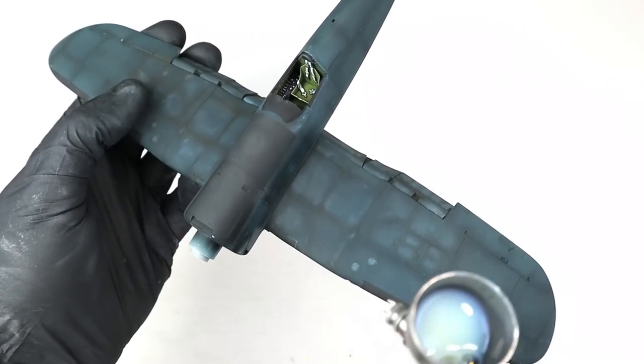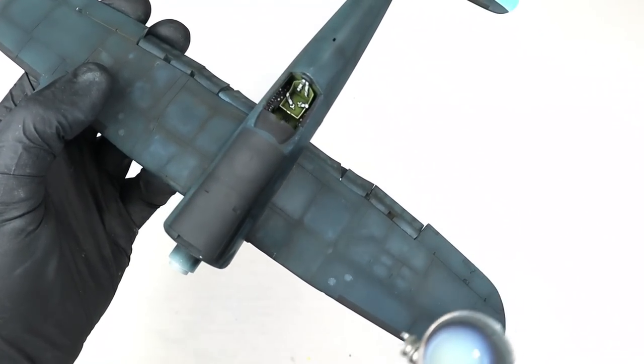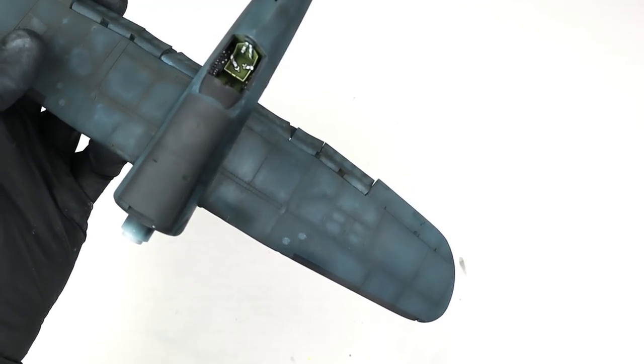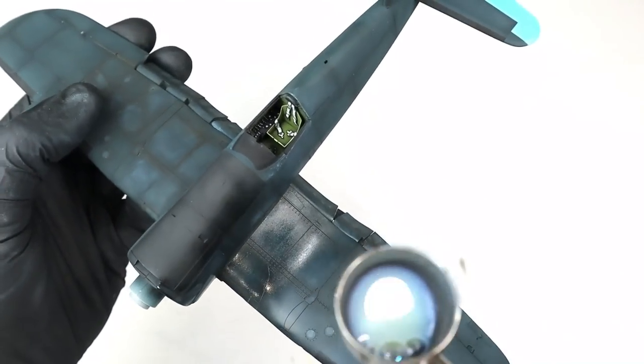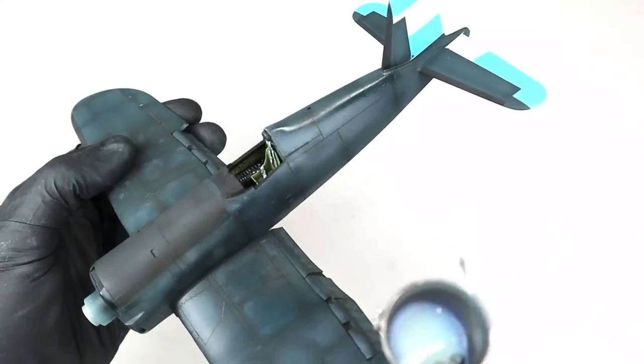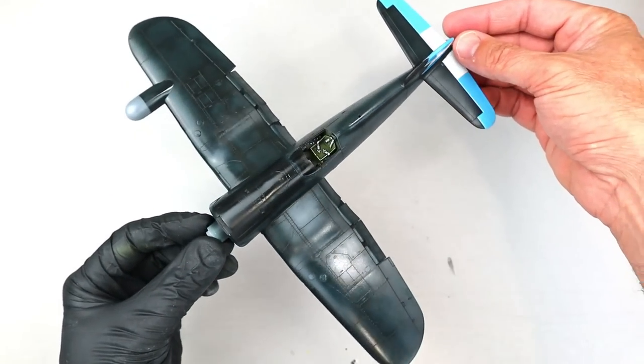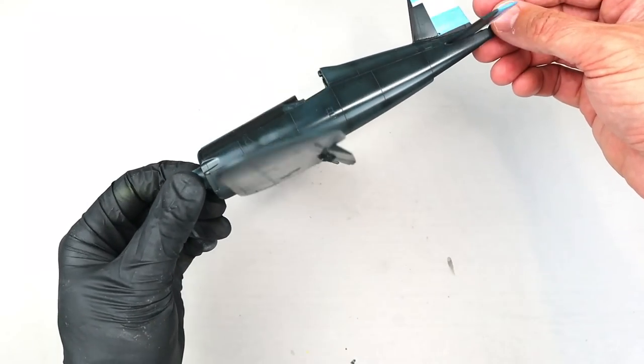With all of the airframe painting complete, I gloss coated the entire model using AK Gauzy's Shine Enhancer. This provides a nice glossy finish for the decals as well as the oil wash that I will be applying to the panel lines and rivets. It also helps to blend in some of those more splotchy weathering effects.